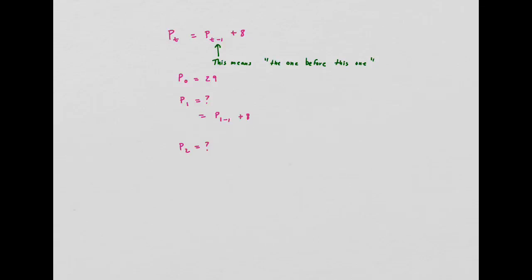So p of 1 is equal to p of 1 minus 1 plus 8, while p of 1 minus 1 is p of 0, because 1 minus 1 is 0, plus 8. I know what p0 is, that's 29, so I'm going to add 8 to it, so that means that p1 is equal to 37.